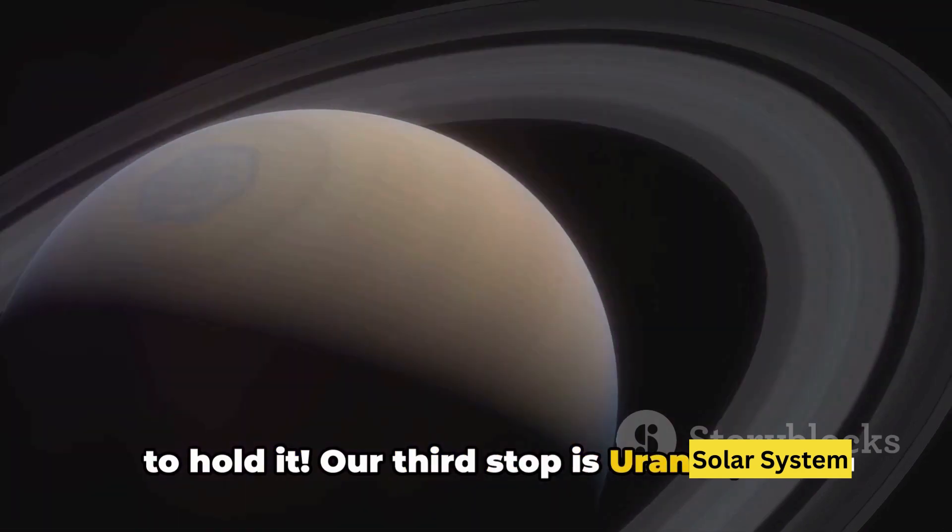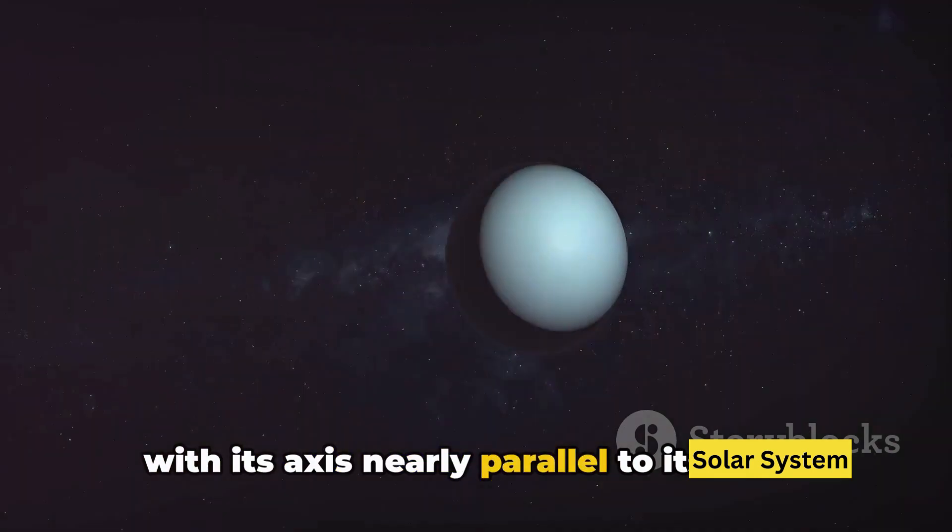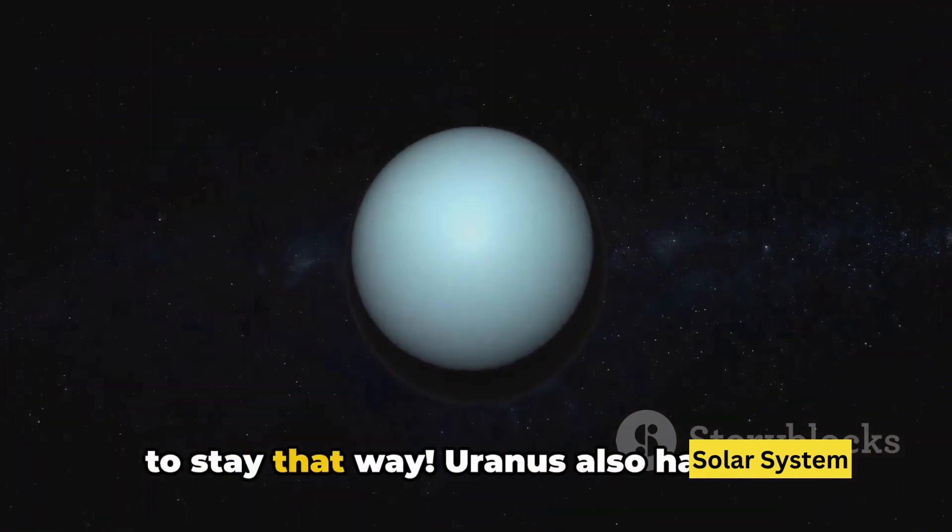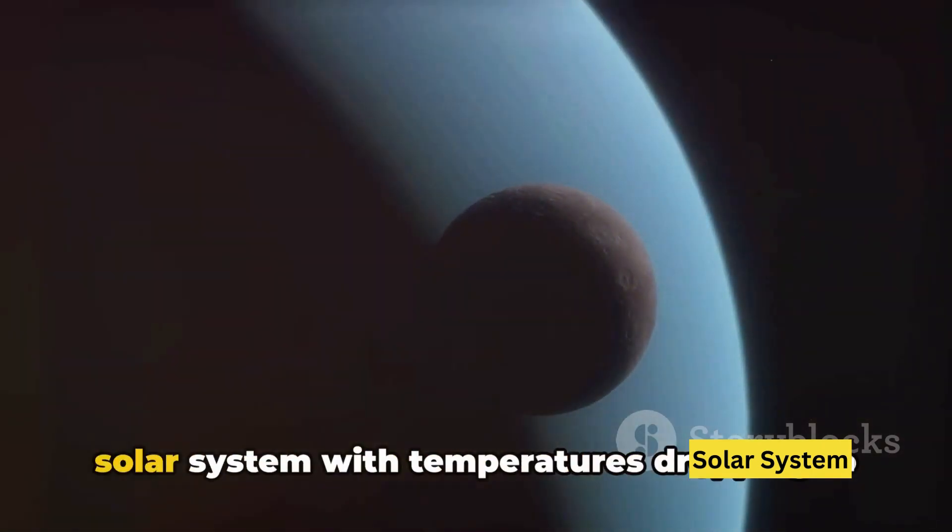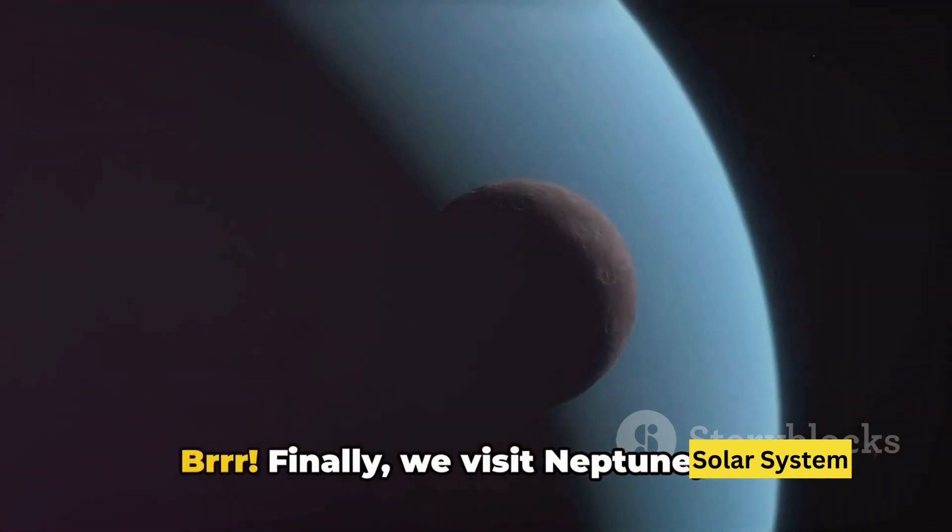Our third stop is Uranus, the tilted planet. It's unique because it spins on its side with its axis nearly parallel to its orbit. It's as if Uranus rolled over and decided to stay that way. Uranus also has faint rings and it's the coldest planet in our solar system with temperatures dropping to minus 370 degrees Fahrenheit. Burr!